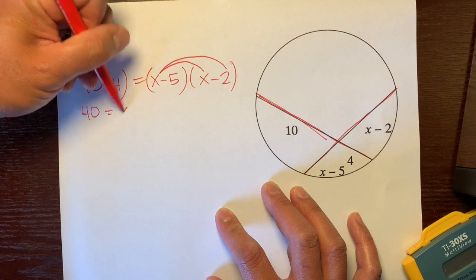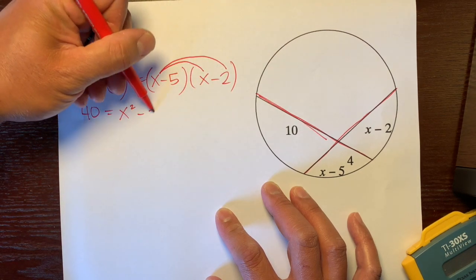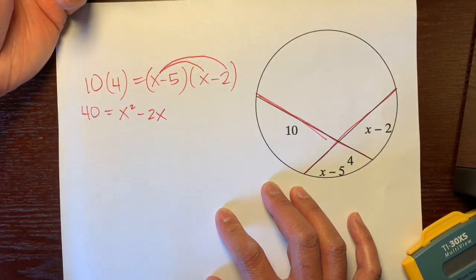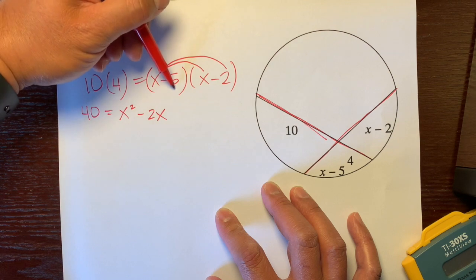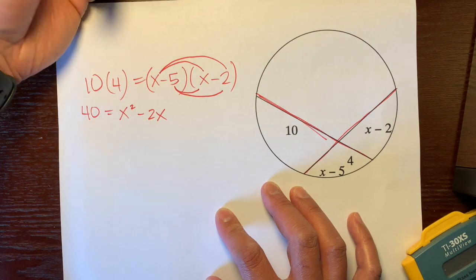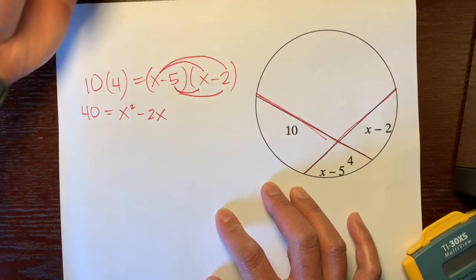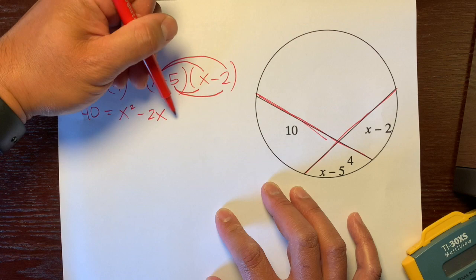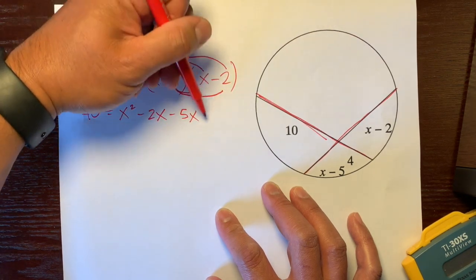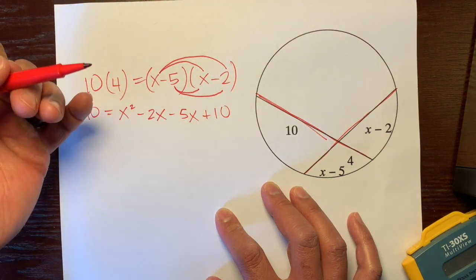So x times x is x squared. X times negative 2 is negative 2x, right there. And then we're going to do distribution again. So we're going to distribute this negative 5 to here and to here. So we're going to distribute twice. Distribute this x once, x here, and then it's negative 5. So negative 5 times x is negative 5x. Negative 5 times negative 2—two negatives make a positive—so plus 10. So there's that.